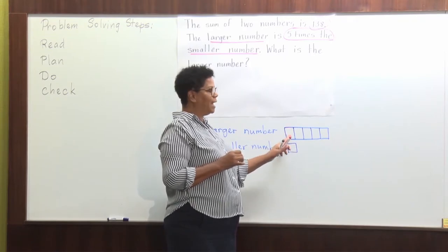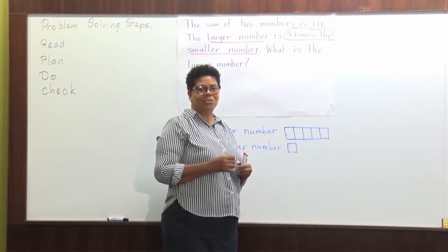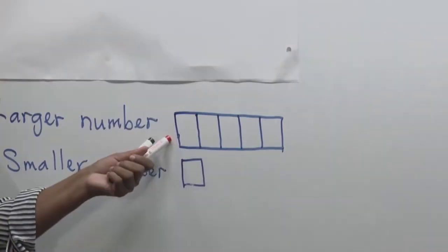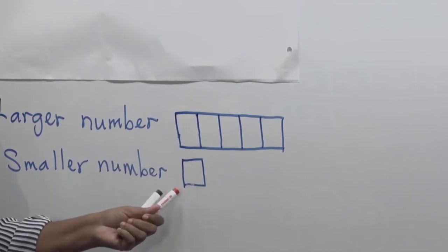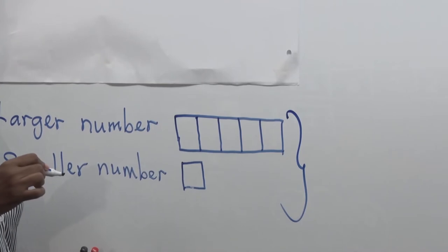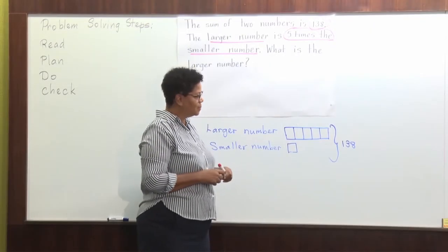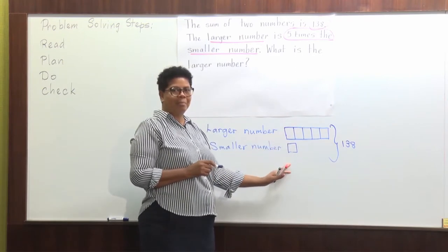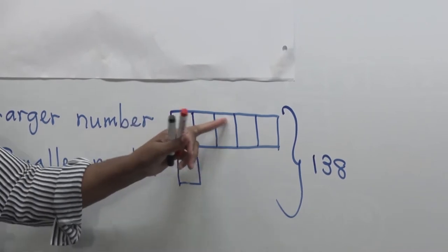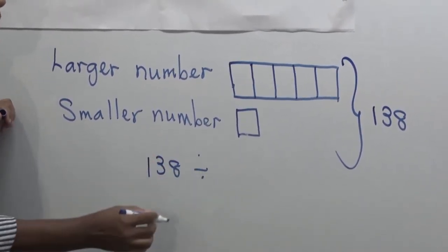Remember, one way to describe unequal shares is as so many times as many as. So my larger number is five times as many as my smaller number. These two numbers together are equal to 138. So remembering what we did in fractions, this is my whole and my whole has one, two, three, four, five, six equal parts. So to find out how many in each part, I can divide. I put 138 divided by 6.